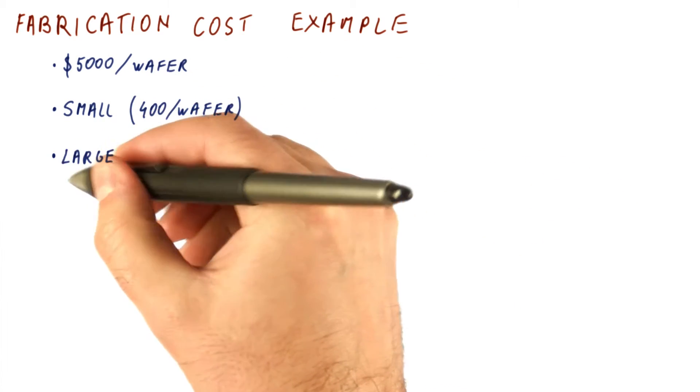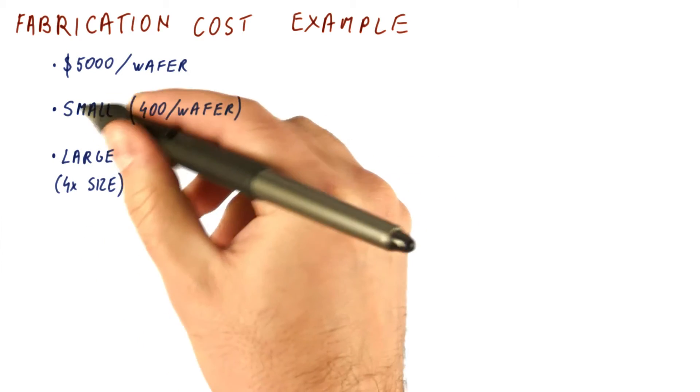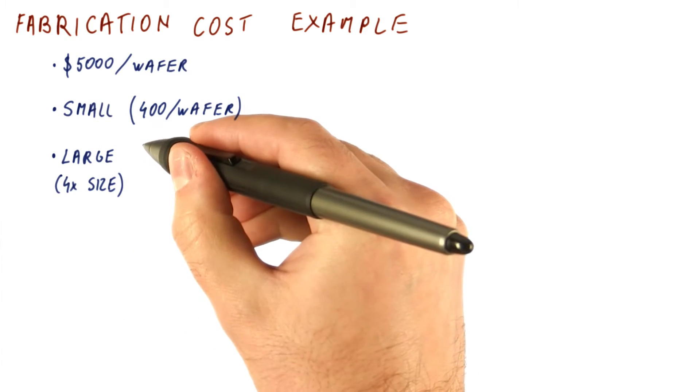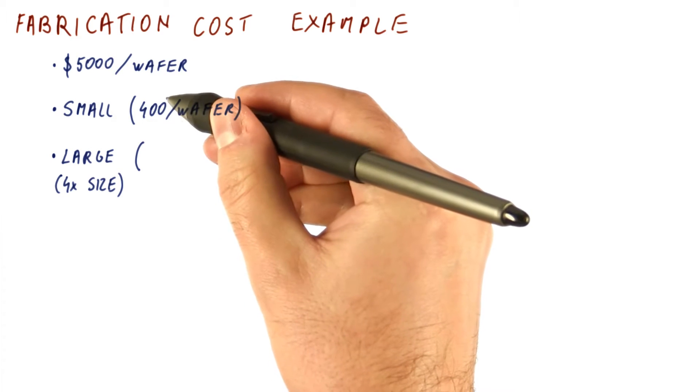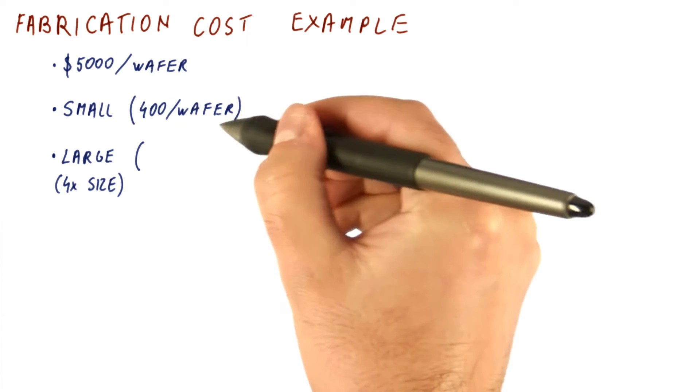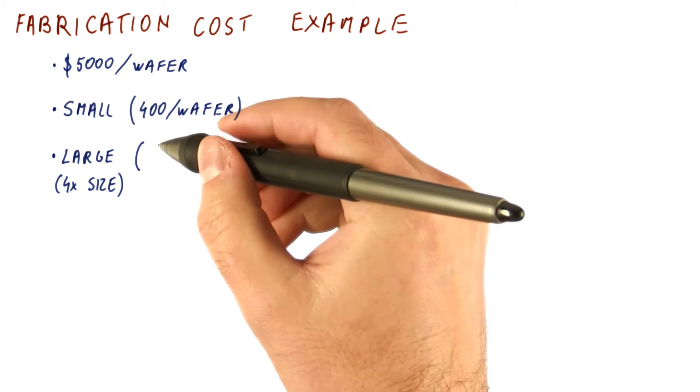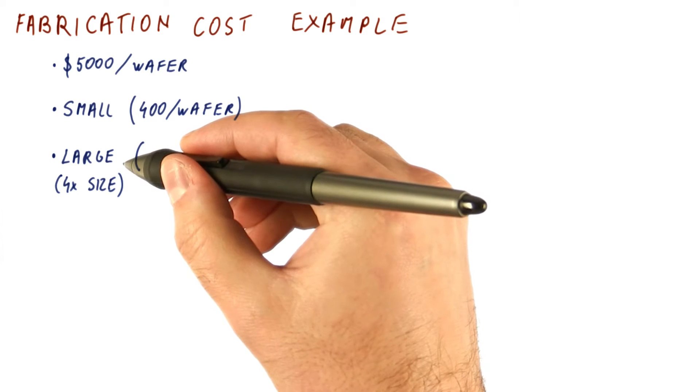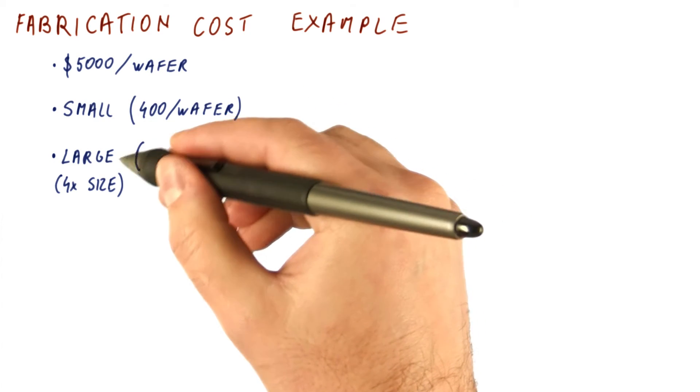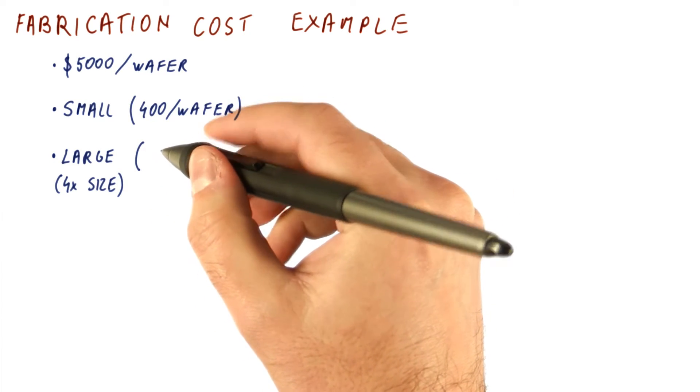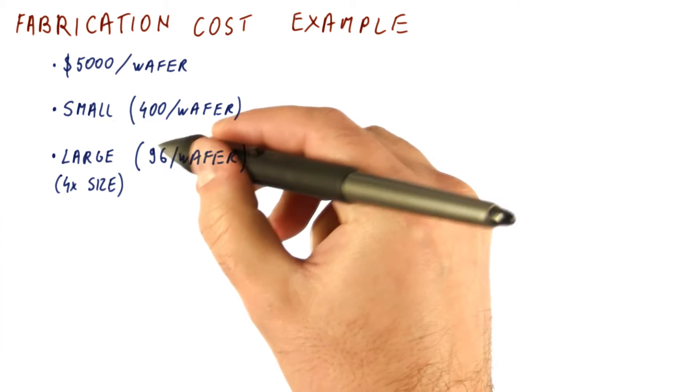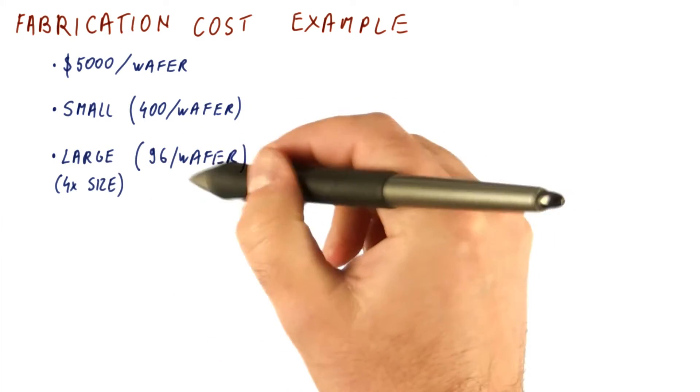And then we want to manufacture large chips that are four times the size of the small chip. So now you would think that we would have 100 of those on a wafer, but because the wafer is round and the chips are square, we lose some chips along the edge. So let's say that we can fit only 96 of these large chips on a wafer.